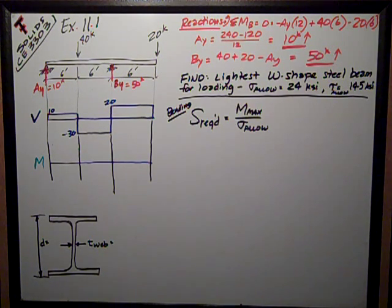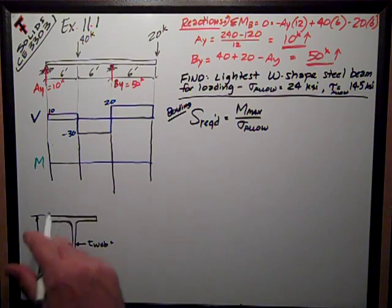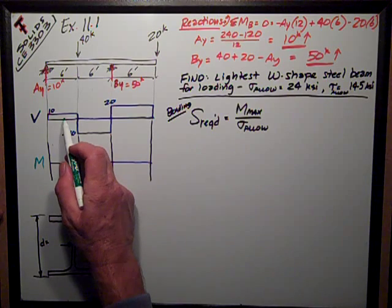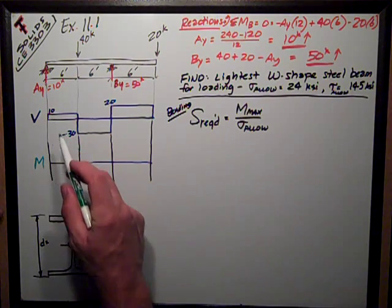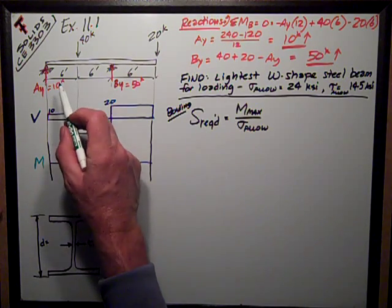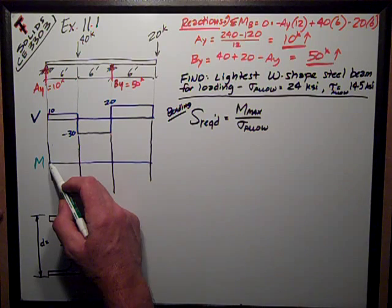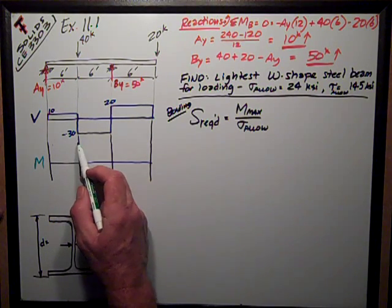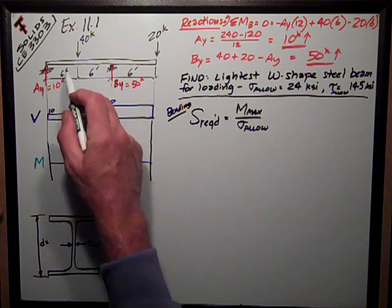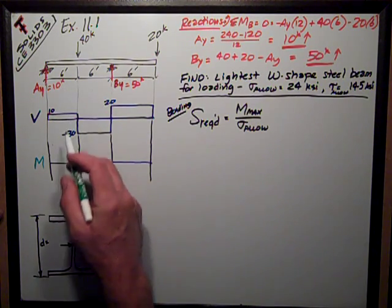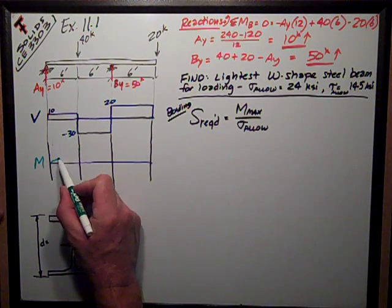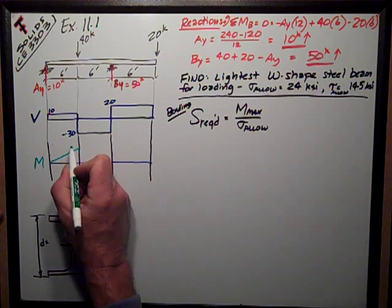Now, remembering that the moment is just the area under the shear diagram, what I have here is positive 10 for my shear, so my slope is going to be positive, so it's going to go up. And the change from the zero point at the start to this point where there's a concentrated load of 40 is going to be the area under the shear diagram, 10 times 6, so 60. It's going to go from zero with a positive sloping line up to 60.